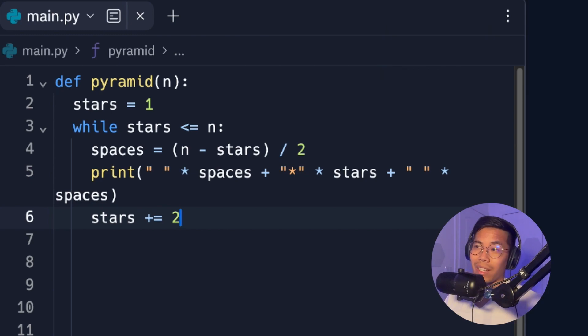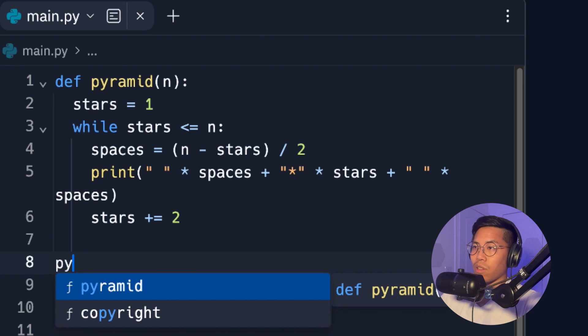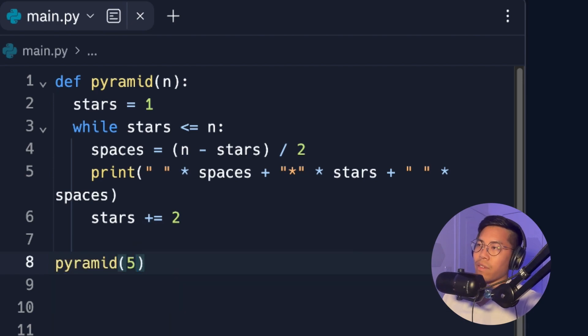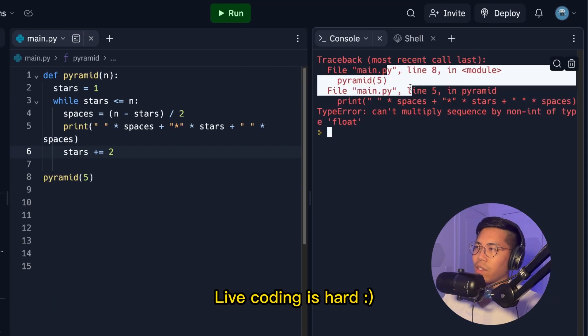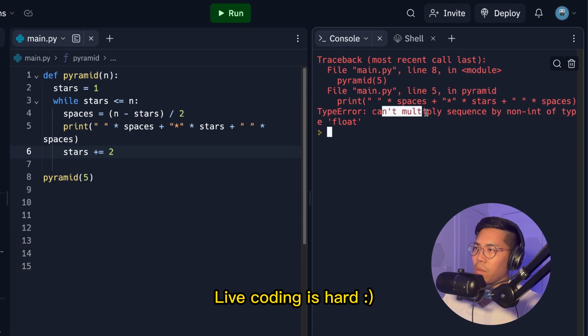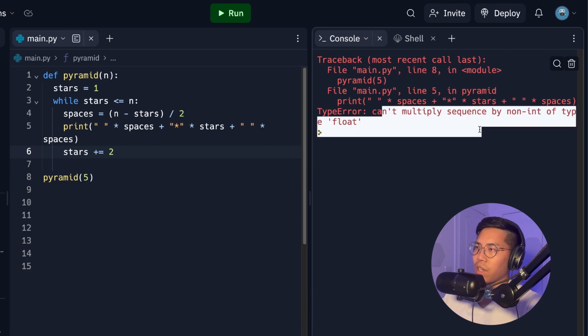That's basically all the code that we need. So now let's test out our code. So let's do pyramid and let's put five. And now let's run our code. And here we ran into an error. Can't multiply sequence by non-int of type float.